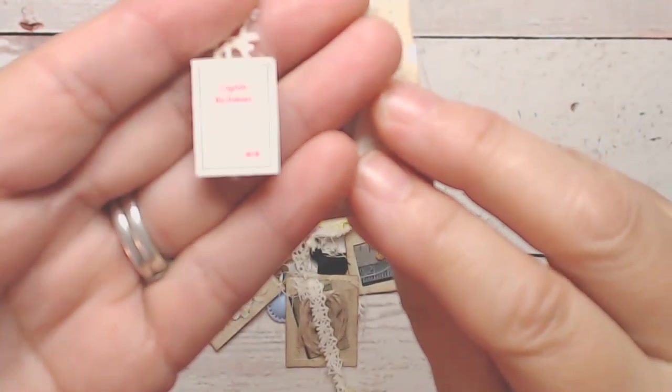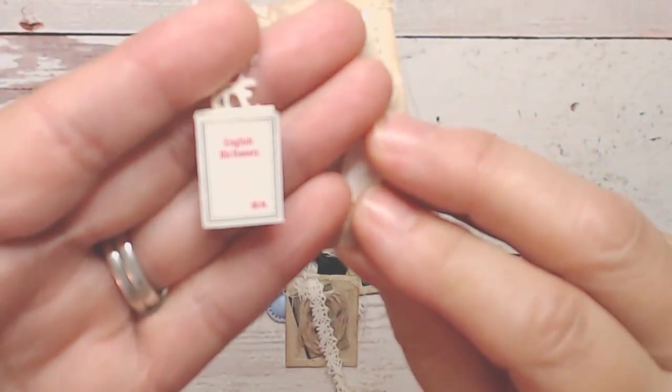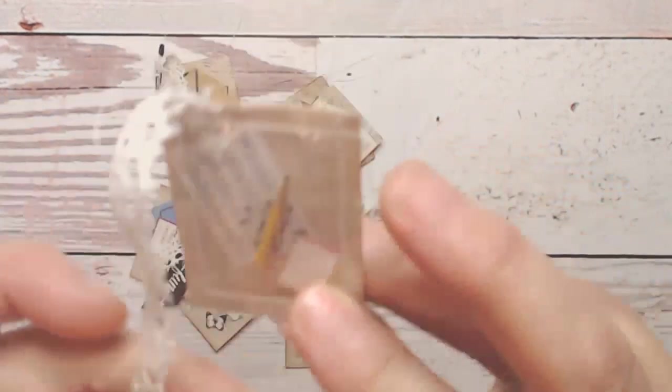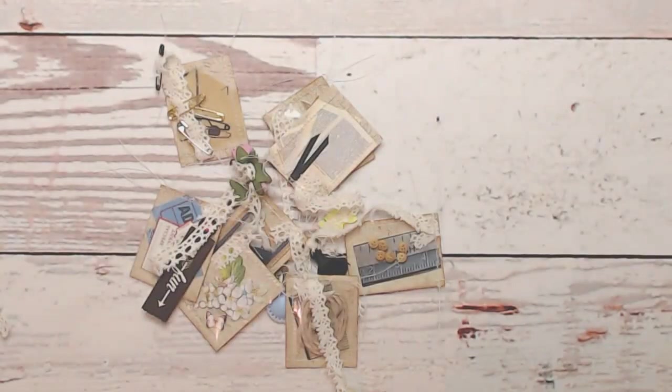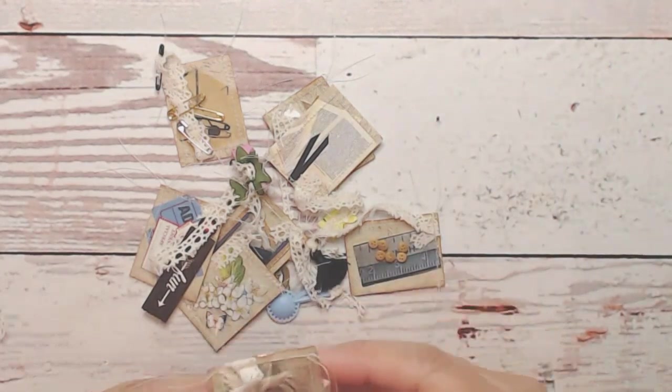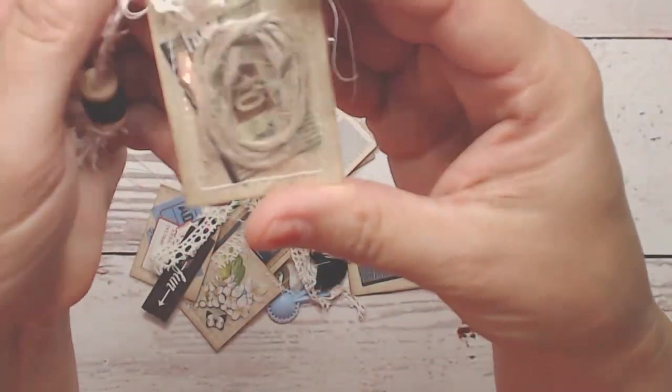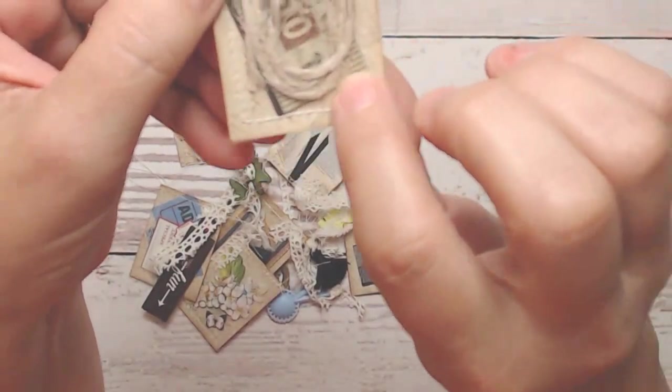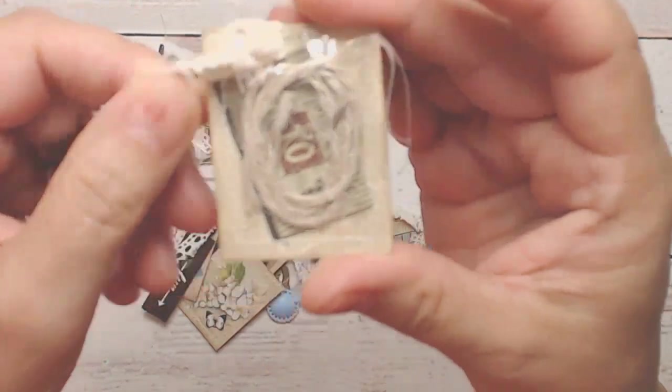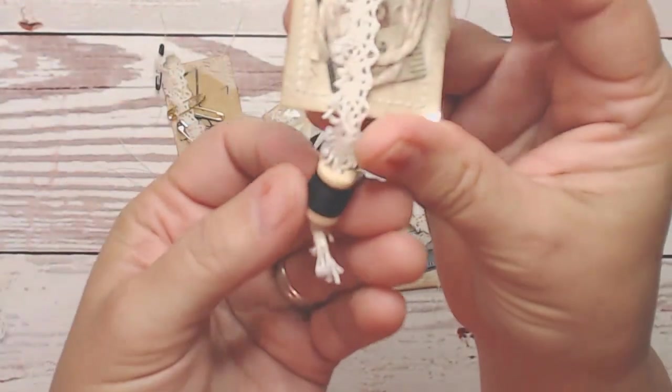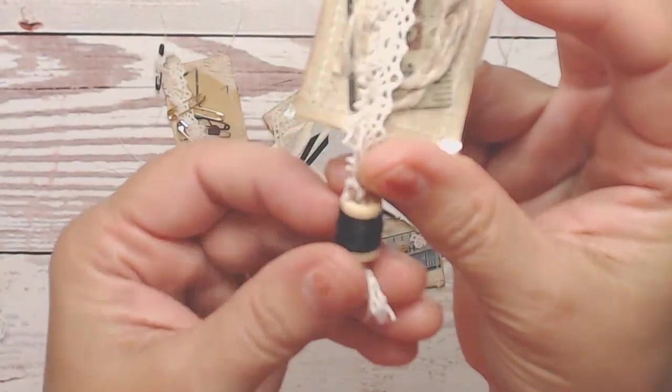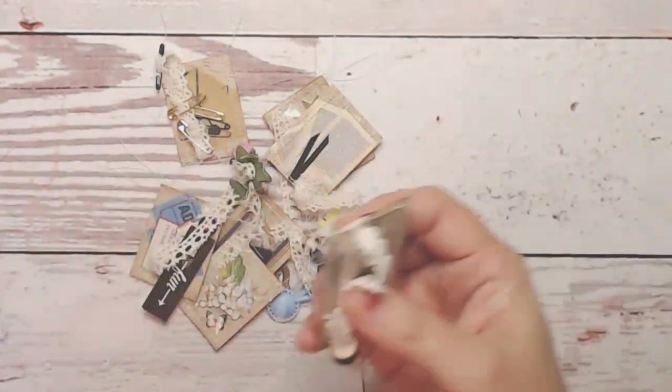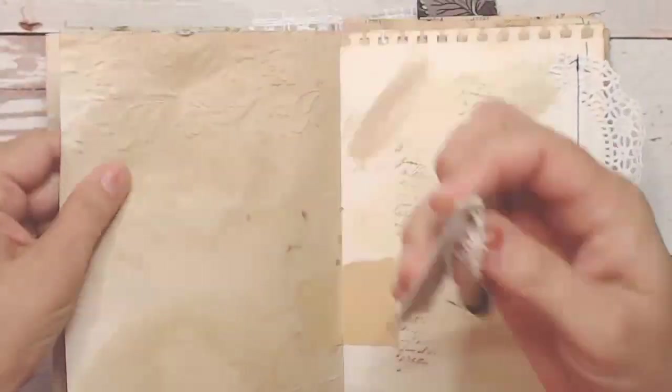This one is a sewing theme and there's some twine in there and a little measuring tape. On the end is a wooden spool with some thread. Look at how adorable these look in a junk journal. They just clip on.